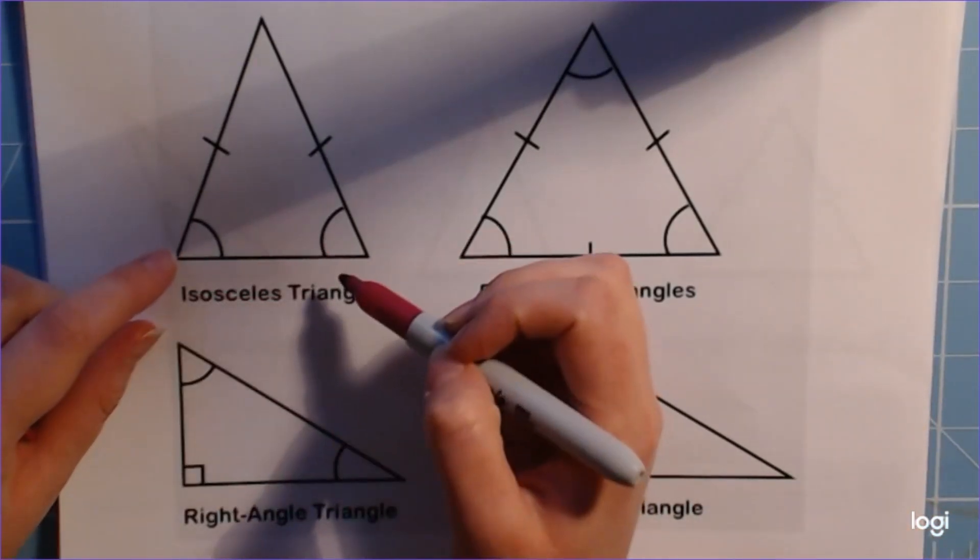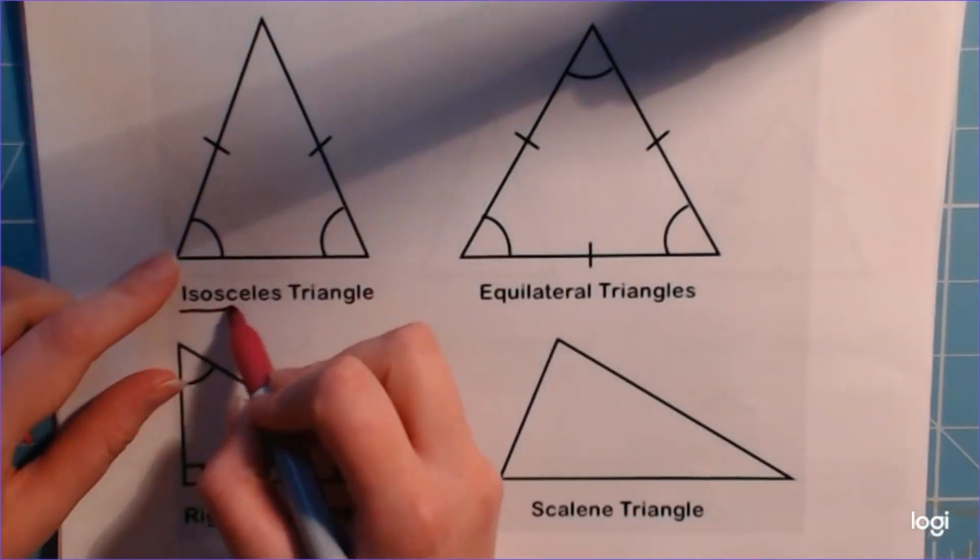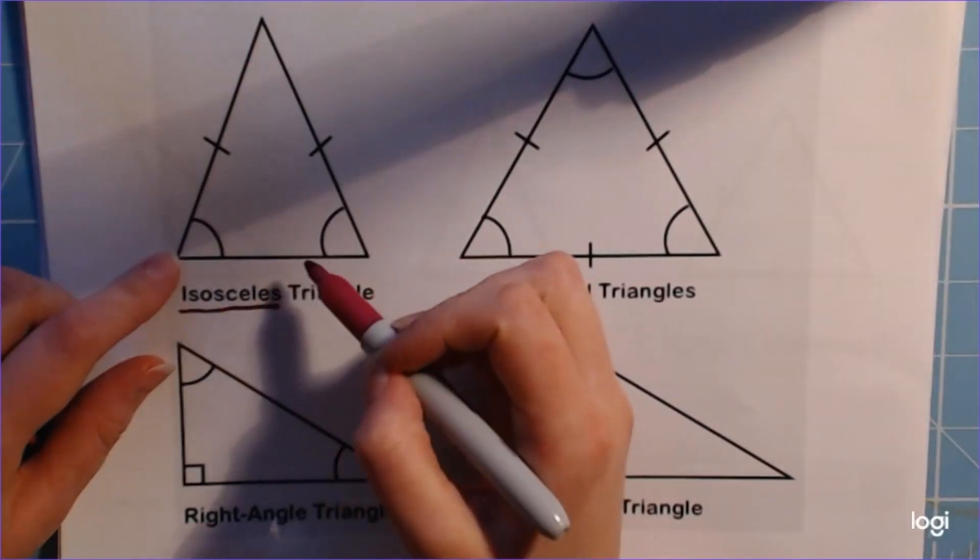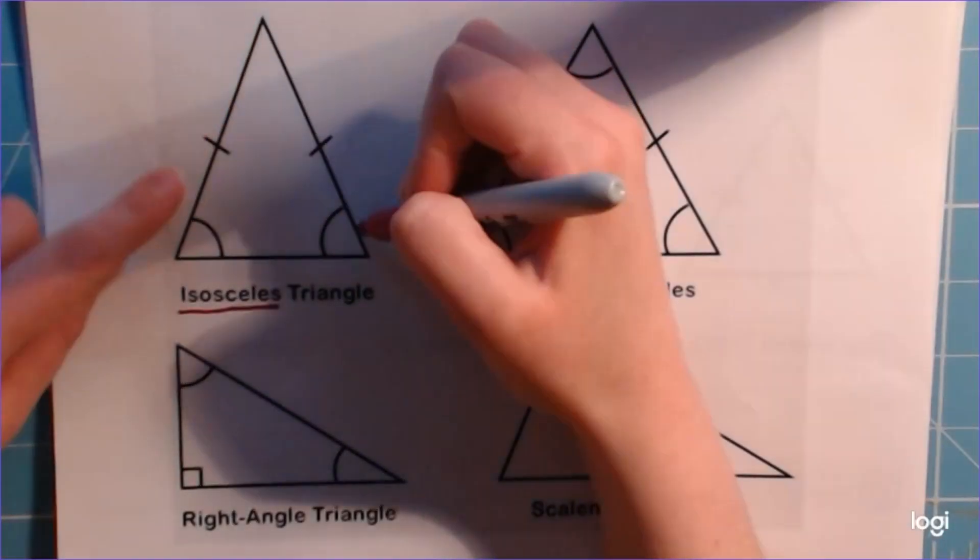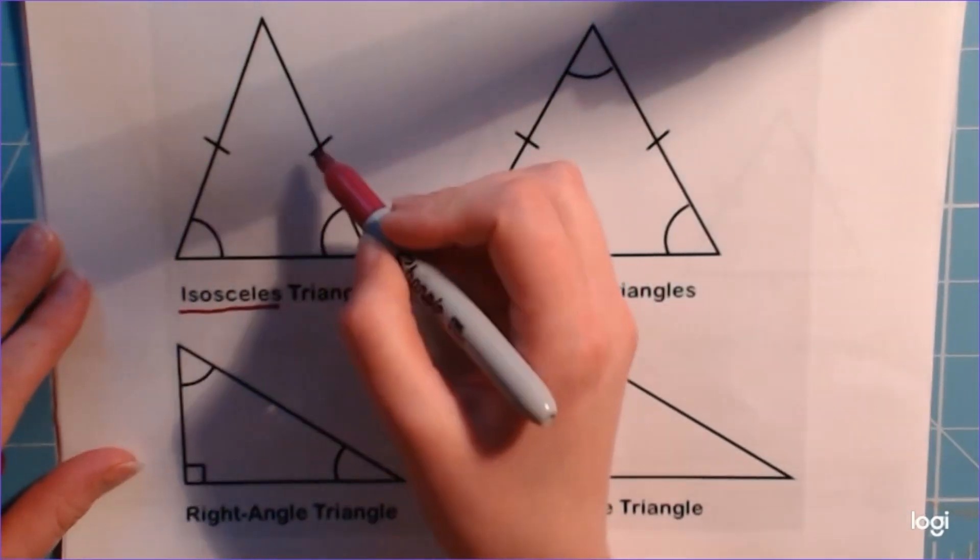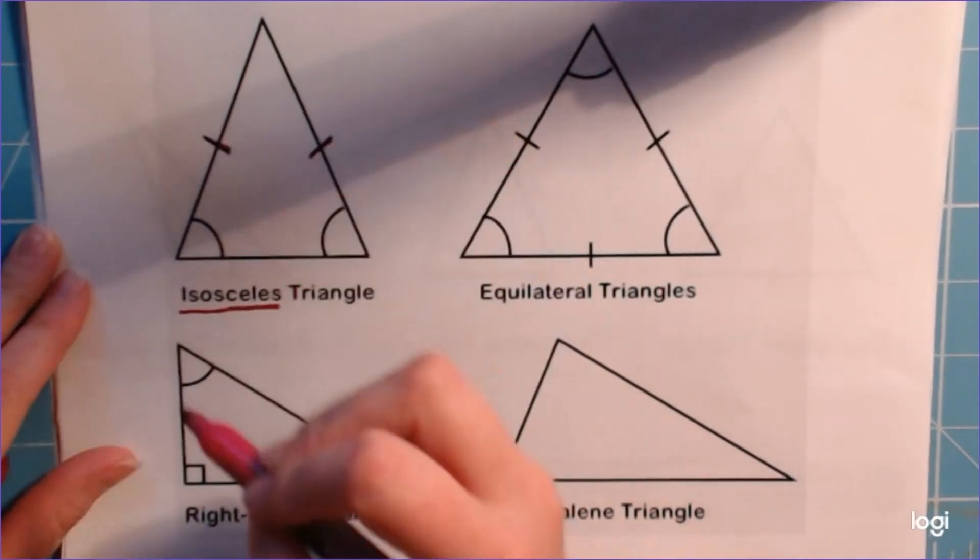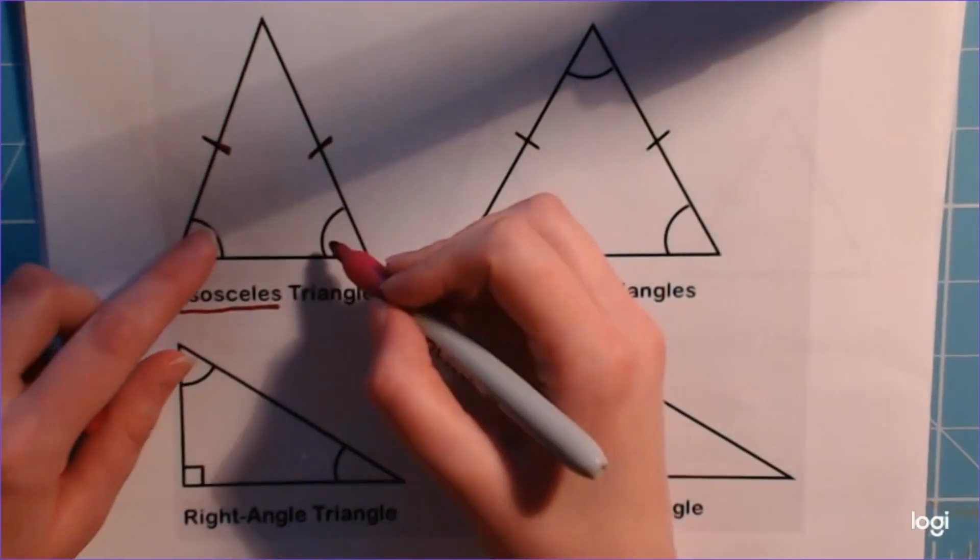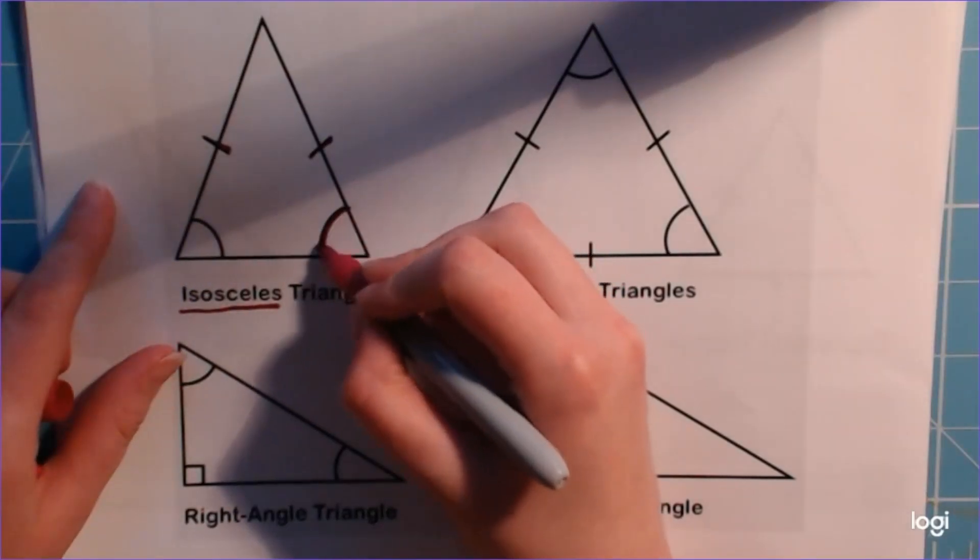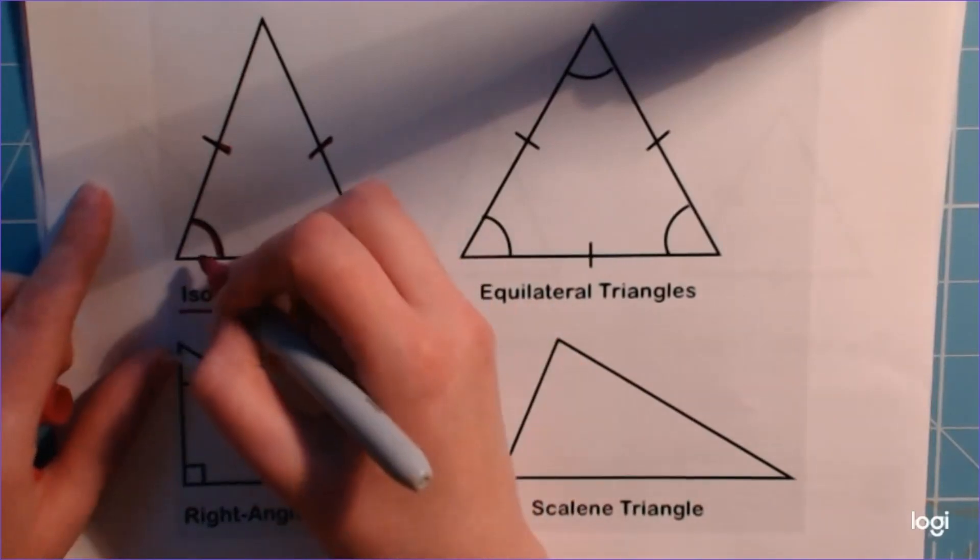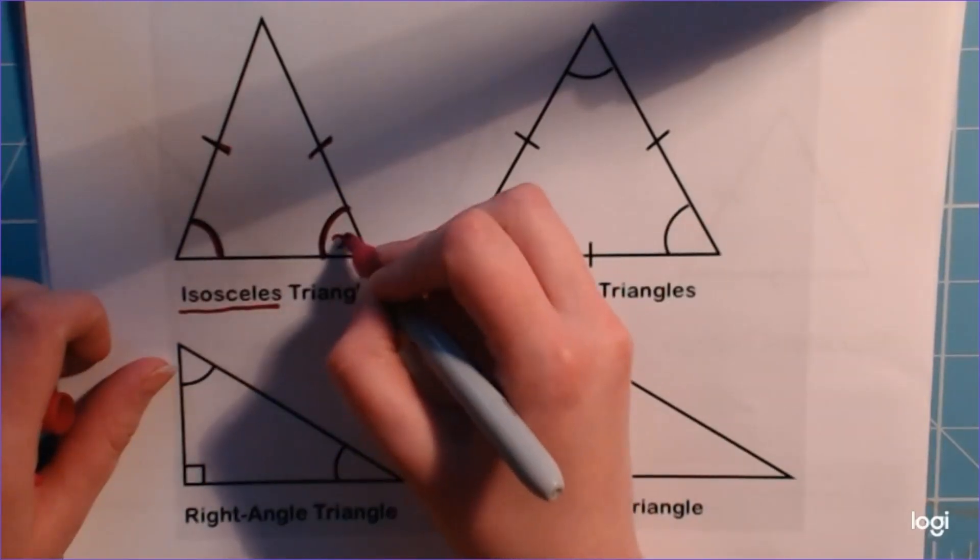We've got the isosceles triangle, careful with the spelling of that one, it's a really strange spelling. Isosceles triangles have got two sides which are the same length and that's what these lines mean. If we've got one line here and one line here that tells us those sides are the same length. We've just drawn these two angles here as well, so I've got an angle here and an angle here and they are the same so I'm going to call them X.